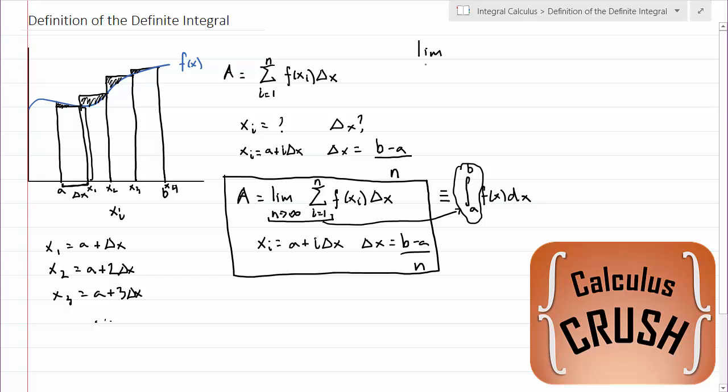So I'll write this out. The limit as n approaches infinity, the sum of i equals 1 to n, f of xi, delta x. This is defined to mean the integral from a to b of f of x dx. Of course, important on this side is also the knowledge that xi equals a plus i delta x and delta x equals b minus a over n. Otherwise, how would you know that it's from a to b? This a and b are not present on the left-hand side, but they are just through the xi and the delta x. This is where the integral comes from. The integral is the area underneath the curve.